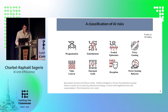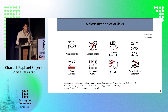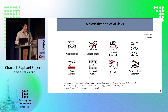We have a classification of AI risks: weaponization, eroded epistemics, and value-locking. Eroded epistemics means basically misinformation — when you are able to generate deepfakes, that's like fake news, and this is really bad for democracy when generated at scale.